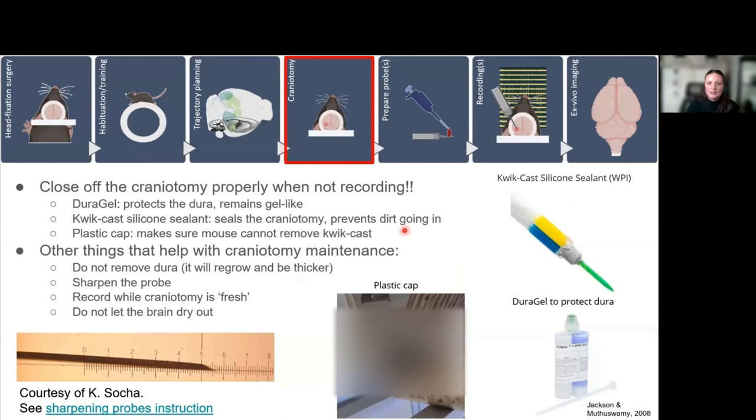It's very important to properly close off the craniotomy when you're not recording, so immediately after surgery but also after every recording. We use three different strategies all at the same time. DuraGel is kind of a gel-like structure which protects the dura, but because it's gel-like, it's also very easy for the mouse to wash it off. So you also want to put some quick-cast silicone sealant. This seals off the craniotomy from anything—dust or anything you don't want in your craniotomy. On top of that, we also have the plastic cap. It might help to not remove the dura unless you're putting something back in to prevent regrowth. But if you remove the dura, it might just regrow and be thicker.